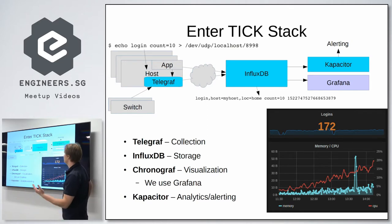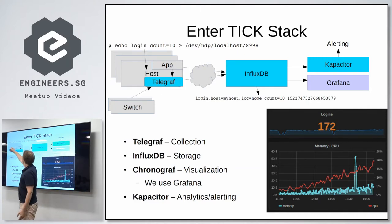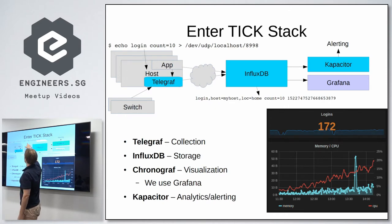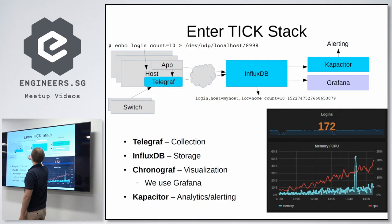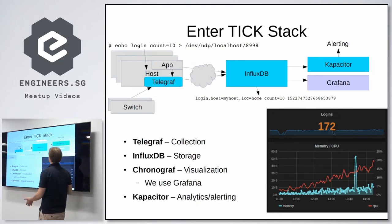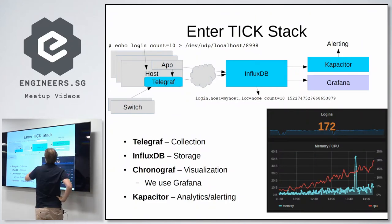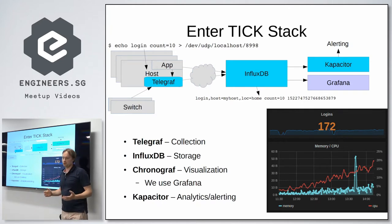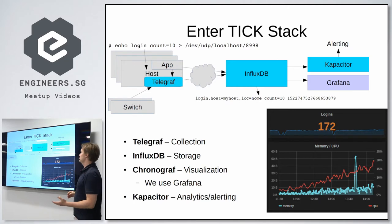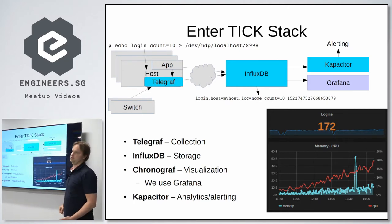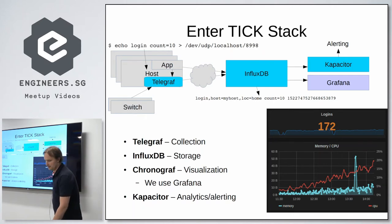You can even do things like echo a measurement name with a count of 10 in the shell and send it to the local UDP port where you have a socket listener for Telegraph. Telegraph adds metadata like hostname, location, data center, business unit, and a nanosecond timestamp. With this enriched data it goes into InfluxDB. This really democratizes our metric stack — basically any user with an application can push data into our metric system.